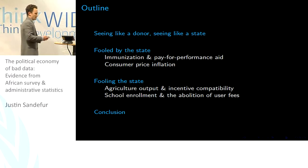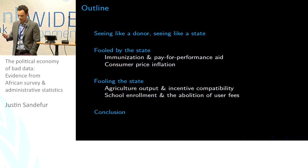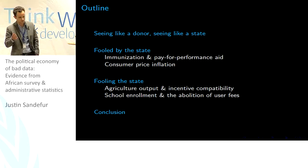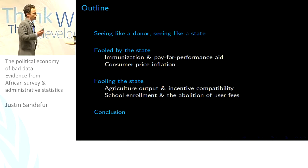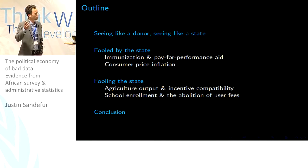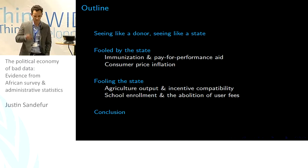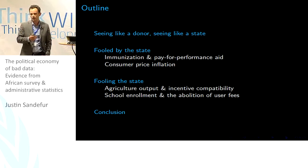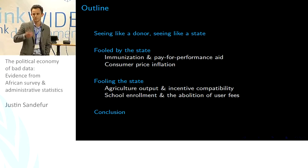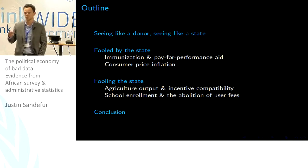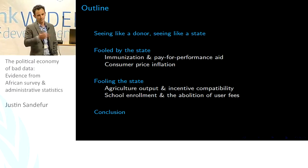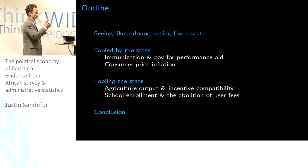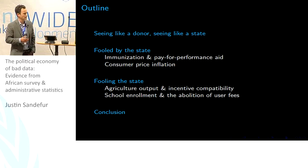Our framework starts by explaining the data demands of international aid donors versus the data needs of an African state — I'm using samples of African countries here. I want to divide this into two very distinct phenomena that often get lumped together. The first is getting fooled by the state — the idea that somehow the government is misleading us, that national statistics offices are lying about the results or through some lack of technical capacity have screwed up the results. There are cases we can make for this, and I'll point to immunization statistics and cases of consumer price inflation.